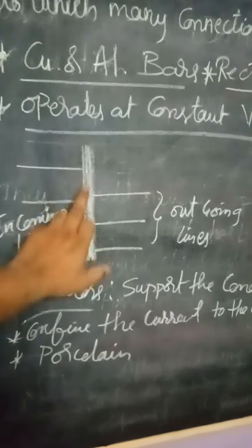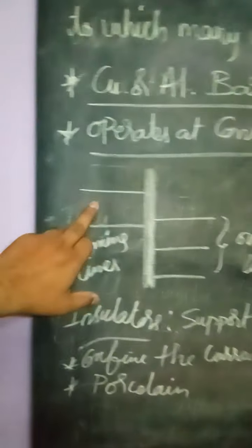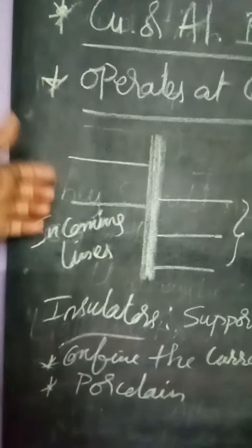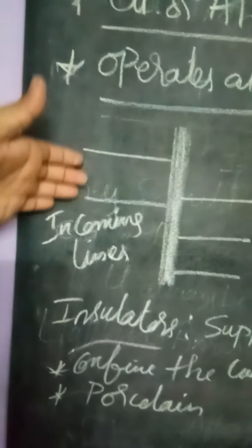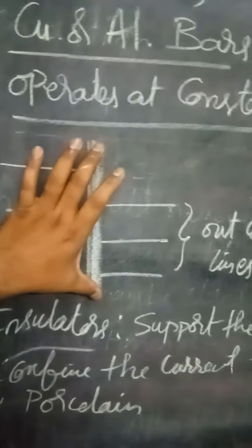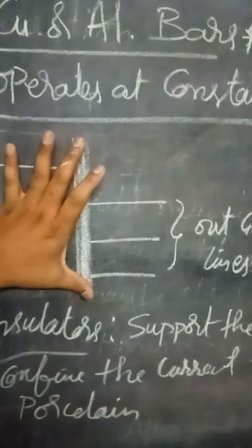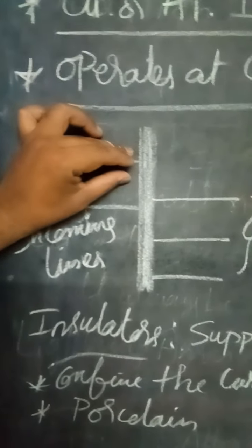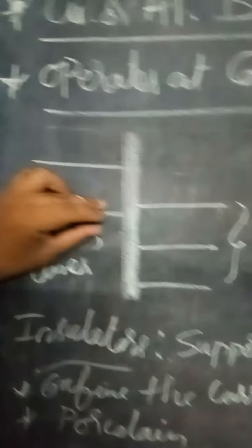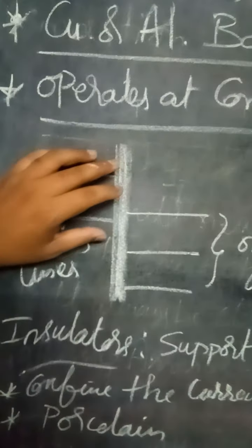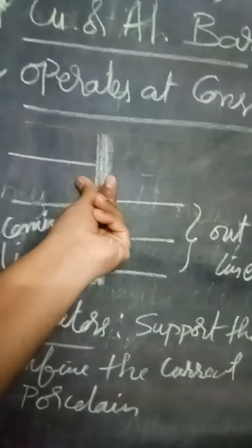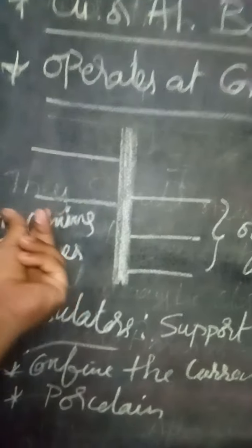Look at this picture to understand. This is a bus bar — I have given it more thickness. This is the incoming line. In a substation, we may have more than one incoming line. For example, in the Alipur substation, we get an incoming line from the Guti power plant or from the BTPS substation.